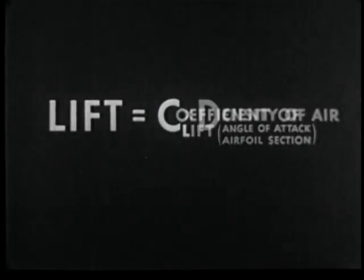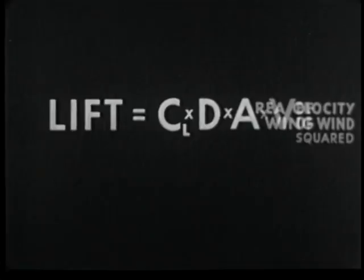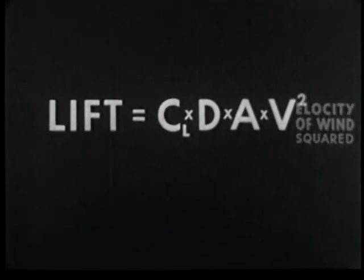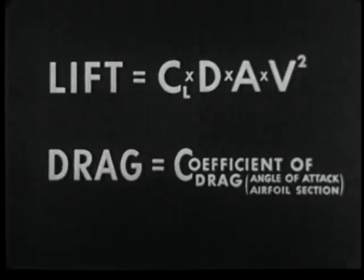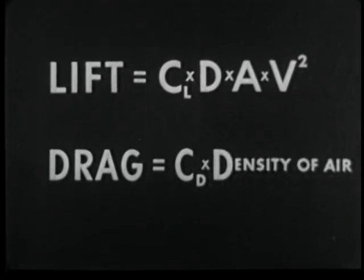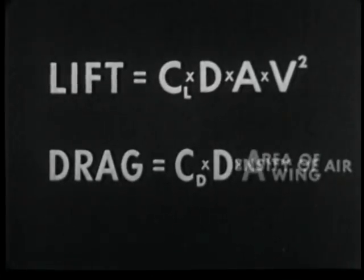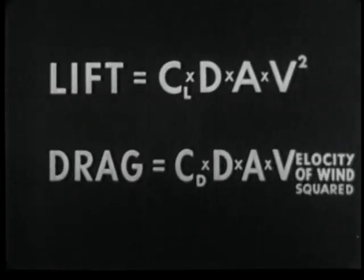Lift is equal to a coefficient — which is determined by the angle of attack and shape of the airfoil — multiplied by the density of the air, multiplied by the area of the wing, multiplied by the velocity of the wind squared. Drag equals the coefficient — which is determined by the angle of attack and shape of the airfoil — multiplied by the density of the air, multiplied by the area of the wing, multiplied by the velocity of the wind squared.